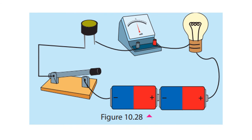Construct the circuit by connecting the bulb, milliammeter, light-dependent resistor, switch, and dry cells. First, cover the light-dependent resistor so that no light falls on it and record the observation. Then remove the cover and let the environmental light fall on the light-dependent resistor and record your observation. Then light the electric torch and direct its light on the light-dependent resistor and record the observation.